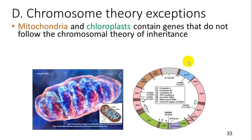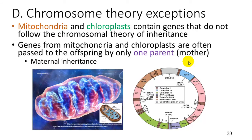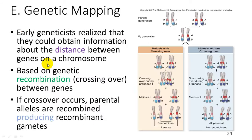Some exceptions to chromosome theories involve mitochondria and chloroplasts, which from endosymbiotic theory we know have their own genes. Genes for mitochondria and chloroplasts are often passed to offspring by only one parent, usually the mother, and this is called maternal inheritance.